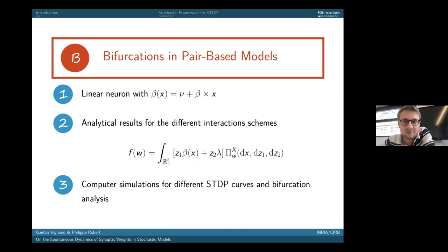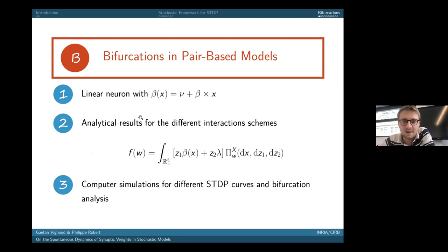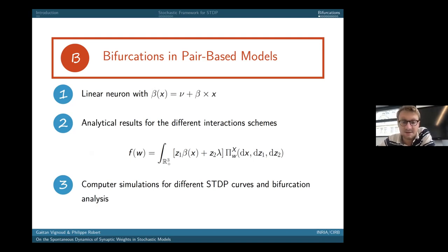For the case of a linear activation function of the form ν + β·x — where ν represents external input and β·x represents the spiking due to presynaptic input — we can compute the functional drift f, which is the integral over the invariant distribution. This allows us to study the dynamics of the limiting equation explicitly for all three STDP implementation models, and we can perform a bifurcation analysis.